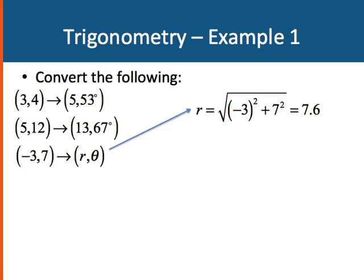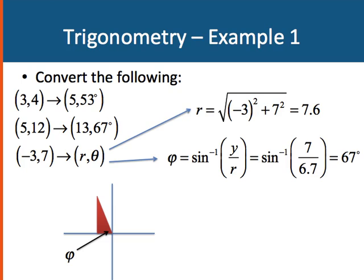Let's look at this one a little bit deeper. I can draw a triangle here, where I go minus 3 over on the x-axis and up 7 on the y-axis. And now I can find the angle phi in that triangle. Phi is just the arc sine of y over r, which is the arc sine of 7 over 7.6, which is 67 degrees. But that gives us that angle shown on the red triangle.